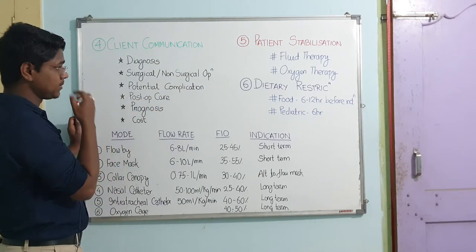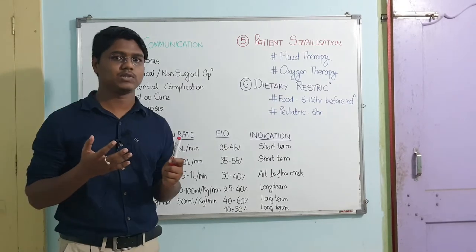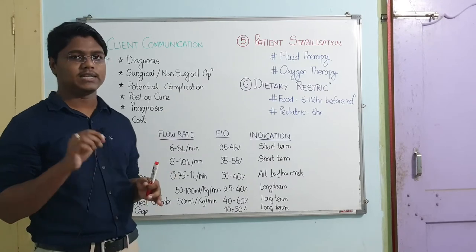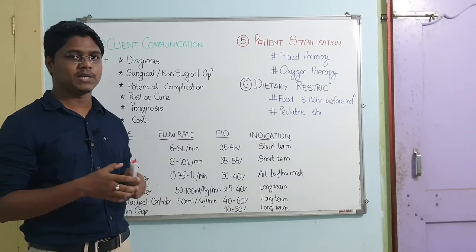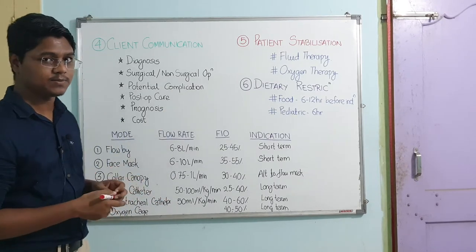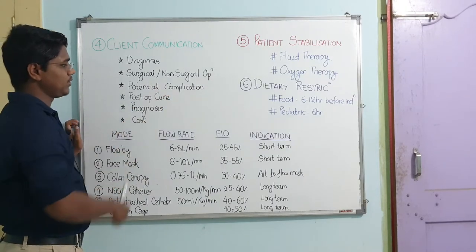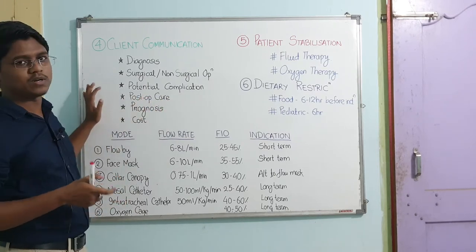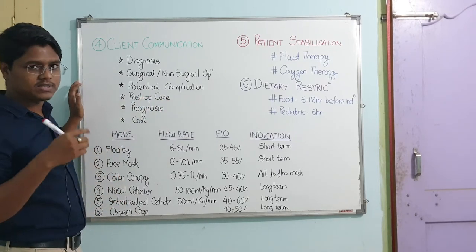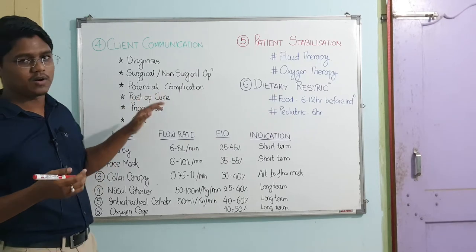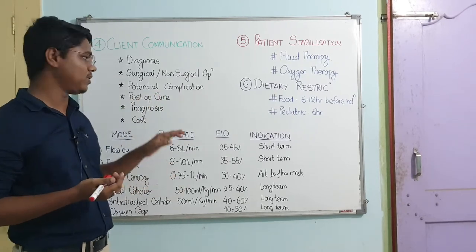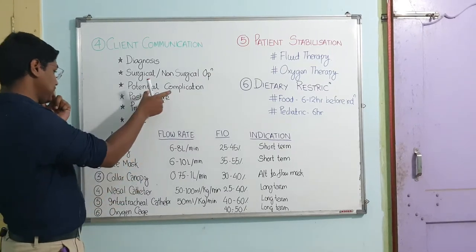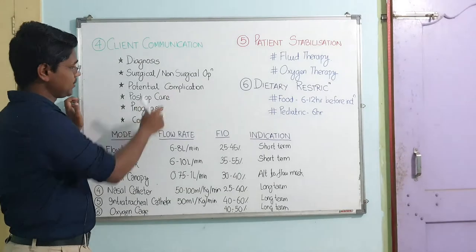Next, discuss potential complications. For example, in uterine rupture cases, peritonitis is a potential complication. You have to clearly tell the owner regarding the complication. This is very important because the owner will not understand what is actually going on. If you don't tell them, they may blame you in the future. So you have to tell the owner clearly and explicitly about all potential complications.